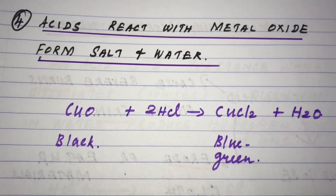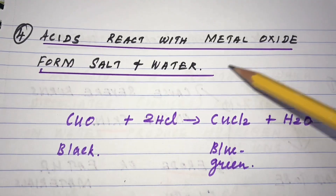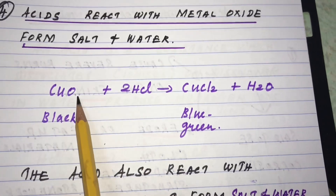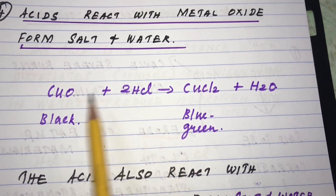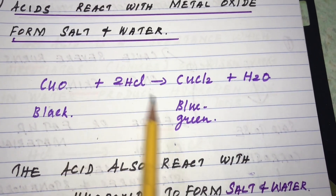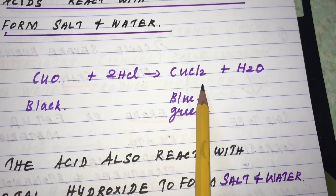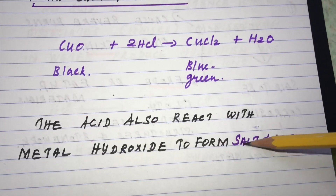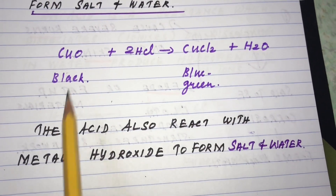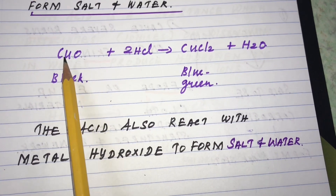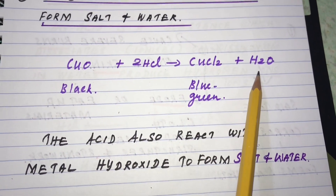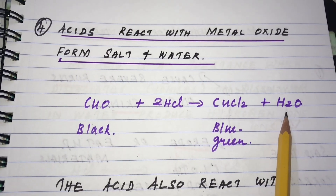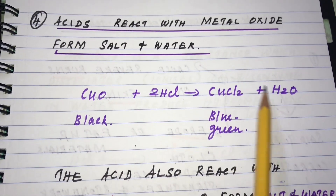The next chemical property: acids react with metal oxides to form salt and water. For example, copper oxide (black color) reacts with hydrochloric acid to form cupric chloride (bluish-green color). Acids also react with metal hydroxides forming salt and water. So acids react with both metal oxides and metal hydroxides to form salt and water.